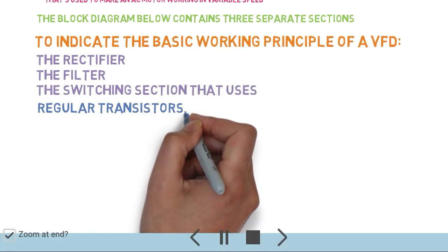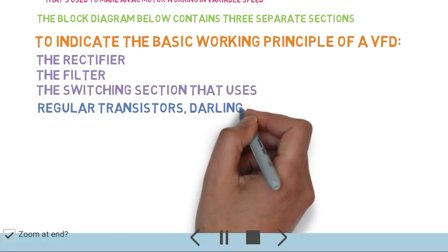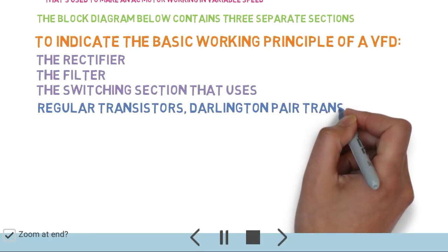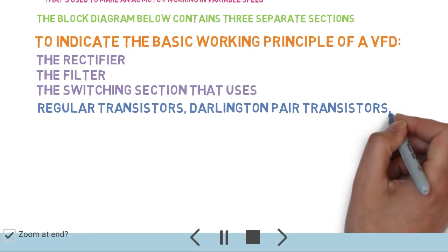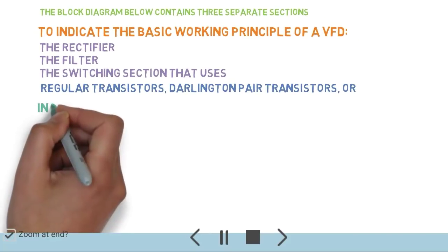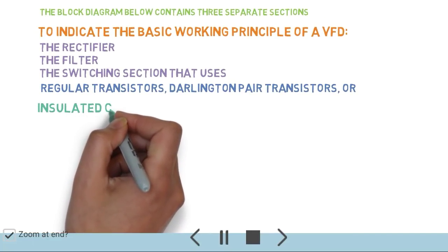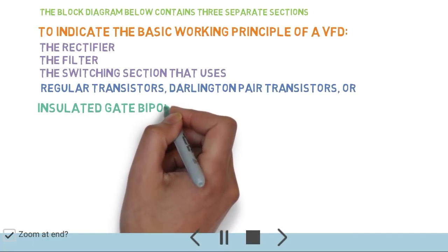The switching section uses regular transistors, Darlington pair transistors, or insulated gate bipolar transistors (IGBT).